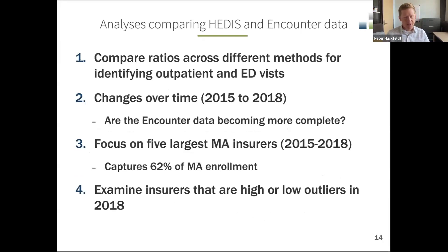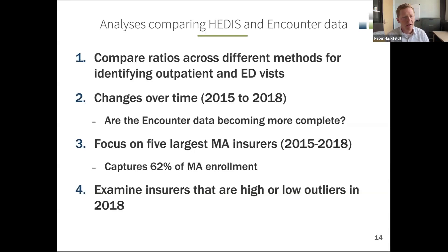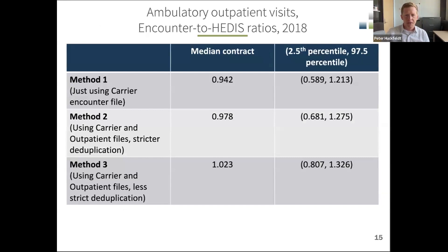We looked at the ratios across different methods for identifying outpatient and emergency visits and how these ratios changed over time between 2015 and 2018. We focused on the five largest Medicare Advantage insurers, capturing 62% of enrollment, to examine whether their encounter data was more complete. We also examined whether insurers were high or low outliers in 2018. Now reviewing the distribution of ratios of encounter visits to HEDIS visits across Medicare Advantage contracts.